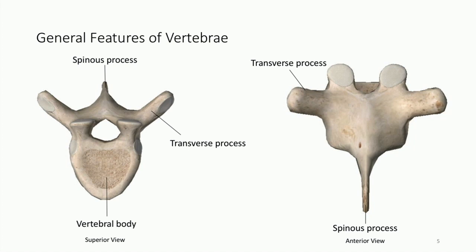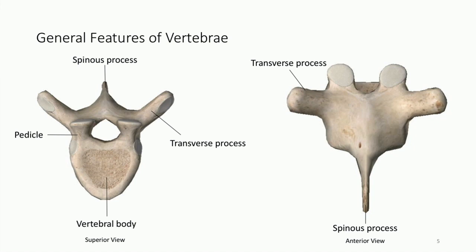Both the transverse processes and the spinous processes are going to be important attachment sites for muscles. To connect the vertebral body to the transverse process, we have a projection of bone called a pedicle — there's one on both sides of the vertebra. To connect between our transverse process and the spinous process, we also have a junctional area of bone called the lamina.